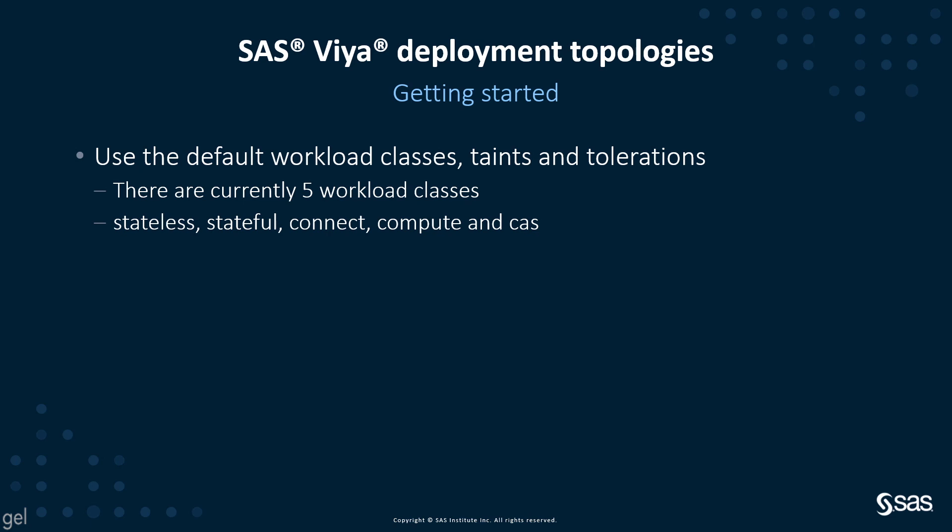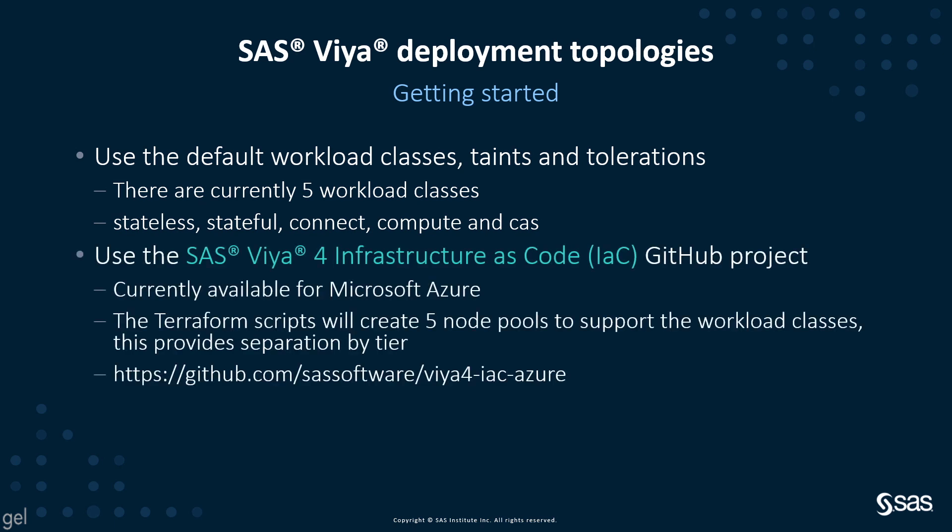Getting started — especially if your organization is new to Kubernetes, I would use the default workload classes, taints, and tolerations. There are currently five workload classes defined: stateless, stateful, connect, compute, and CAS. There is a SAS Viya infrastructure as code project on GitHub, currently available for Microsoft Azure, which provides Terraform scripts that will create five node pools to support these workload classes. This is what we could call separation by tier. There is also the SAS Viya monitoring for Kubernetes GitHub project, which is a good place to start for logging and monitoring.